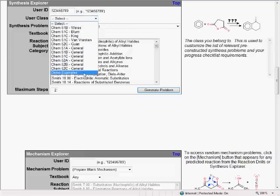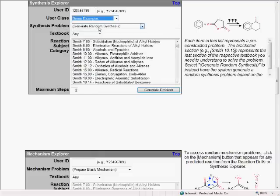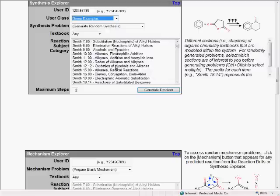From there, select which class you belong to, and for now, let's work on a random synthesis problem. To do that, we'll just leave this selection as Generate Random Synthesis, and then select which chapters of material we're interested in working on.